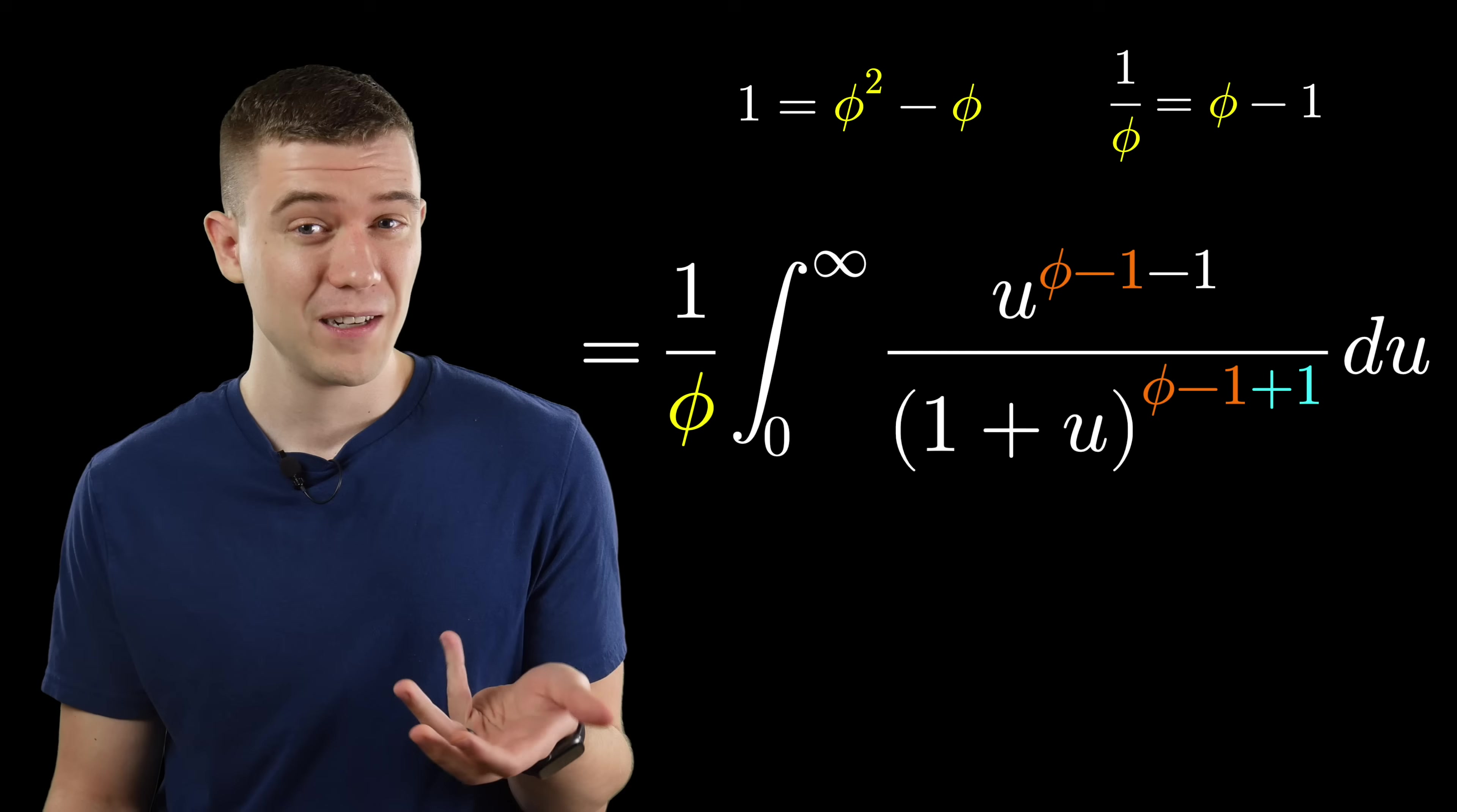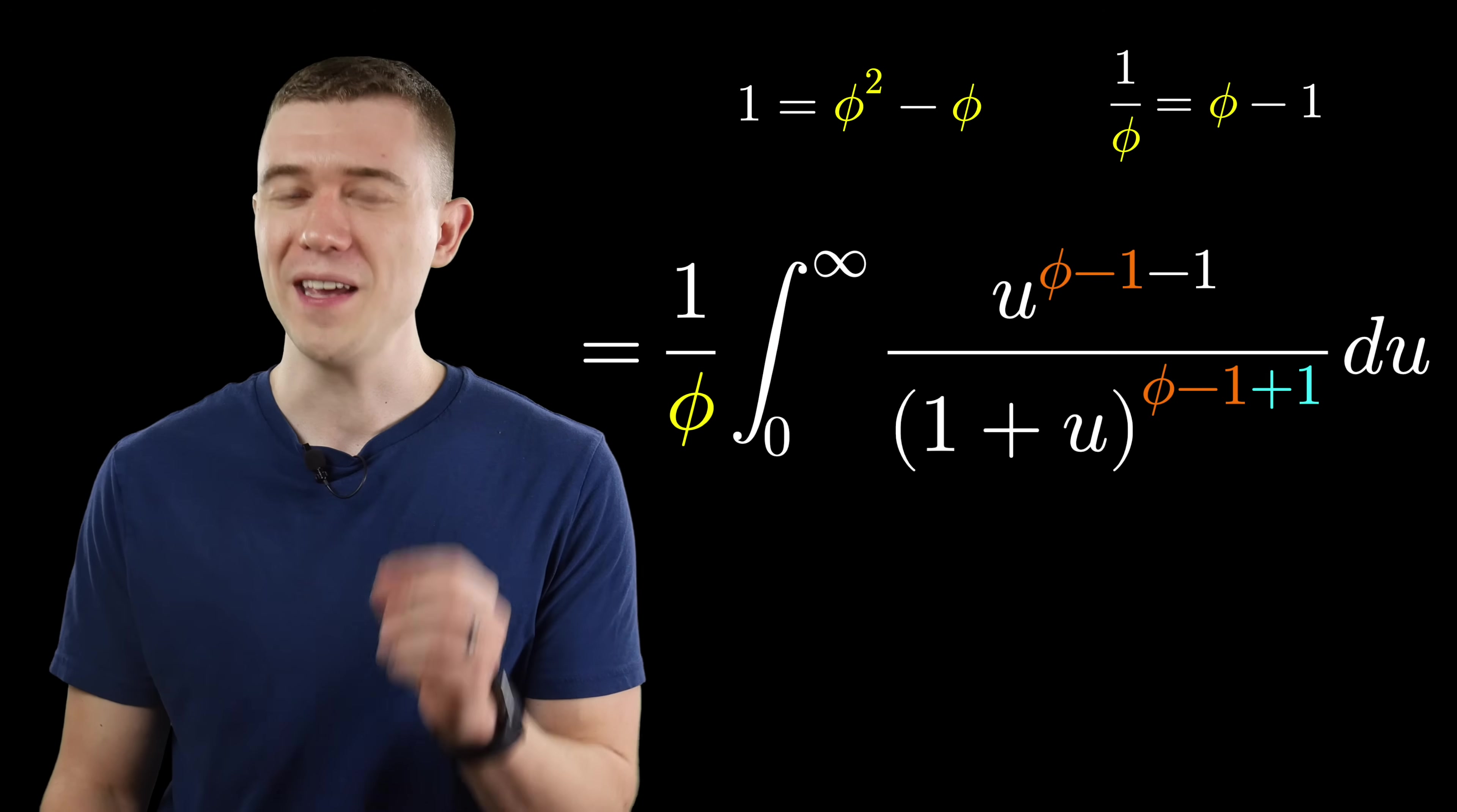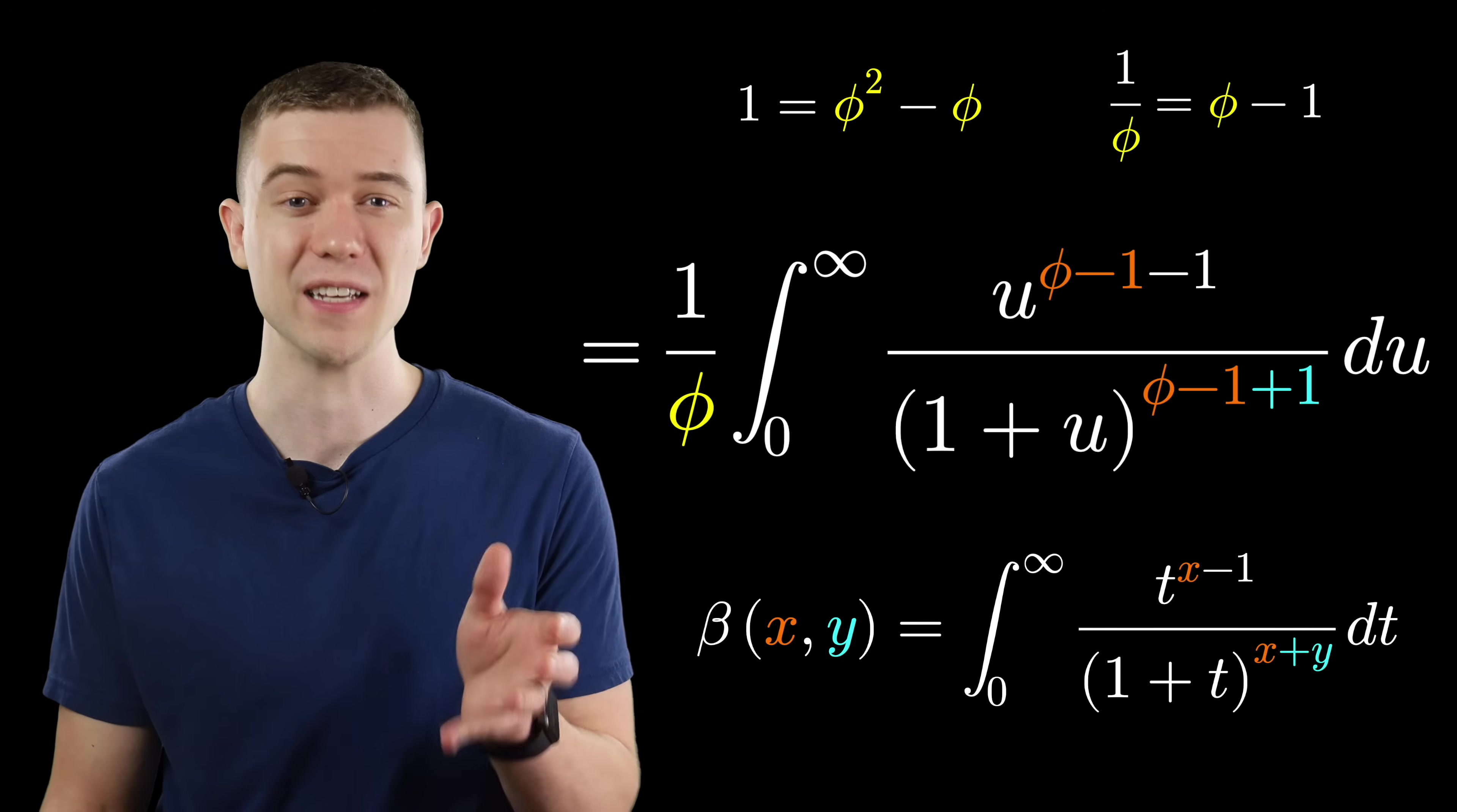Why do this? Well, frequent viewers of this channel might know I'm a pretty big fan of the gamma function. But not in this video. Gamma doesn't show up here, it's gamma's cousin, the beta function. In fact, what we have here is a variant on the beta function. We just have to be very careful with how we match things up.